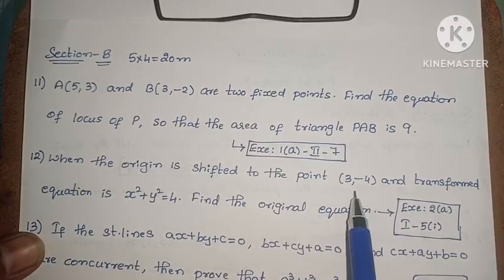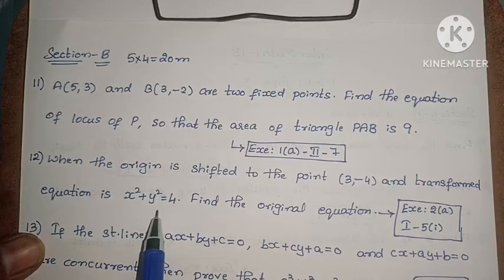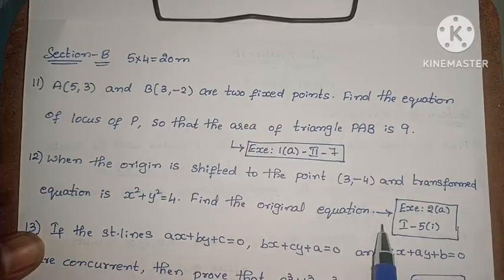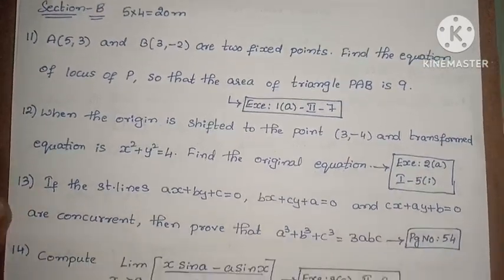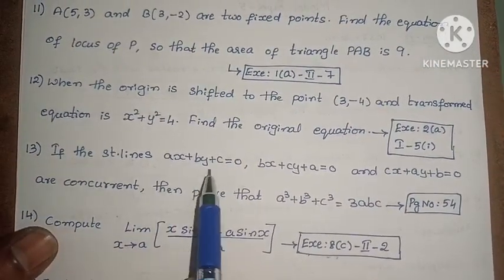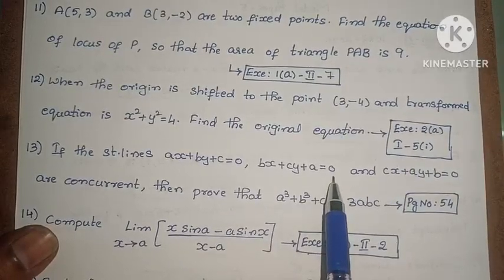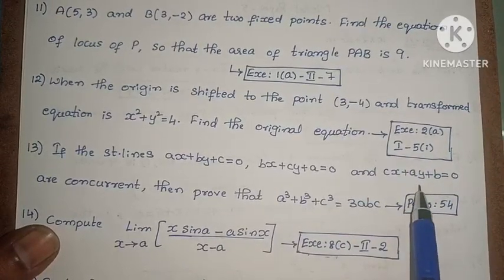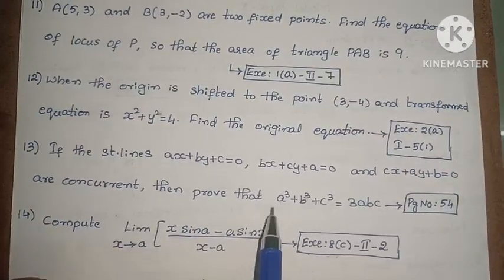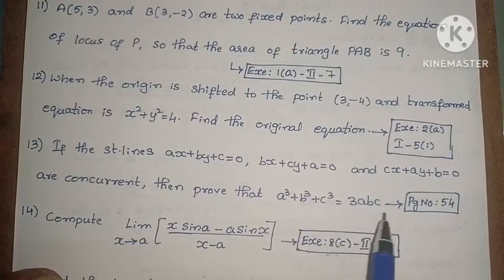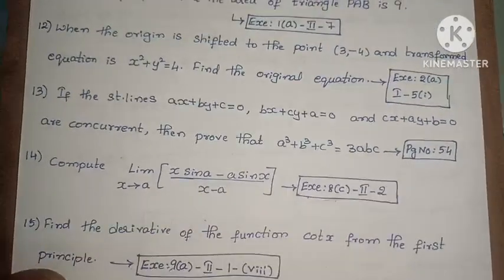Next, when the origin is shifted to the point (3, -4) and the transformed equation is x squared plus y squared equals 4, find the original equation. Exercise 2, first roman law, fifth one. Next, if the straight lines ax plus by plus c equals 0, bx plus cy plus a equals 0, and cx plus ay plus b equals 0 are concurrent, then prove that a cubed plus b cubed plus c cubed equals 3abc. Page number 54, example problem.